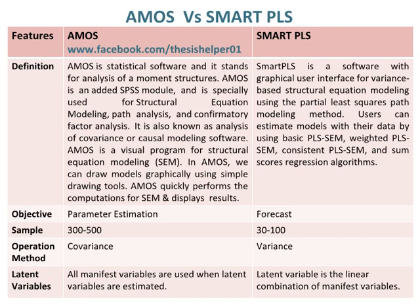The operation method of AMOS is based on covariance, whereas the operation method of SMART PLS is based on variance. Latent variables in AMOS use all manifest variables when latent variables are estimated, whereas in SMART PLS the latent variable is basically the linear combination of manifest variables.